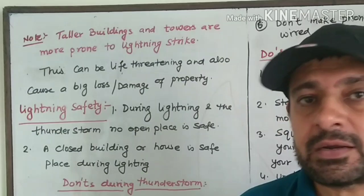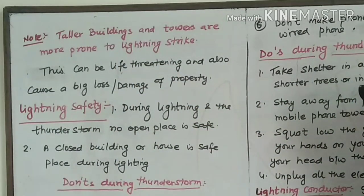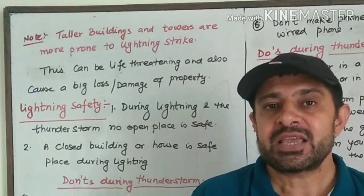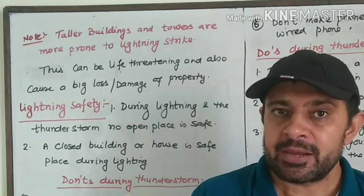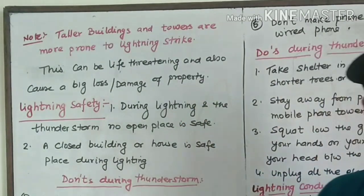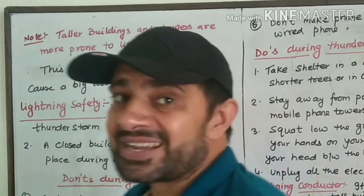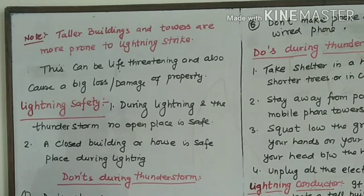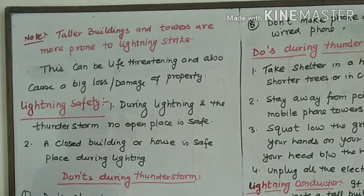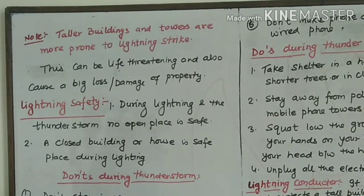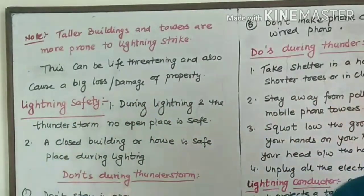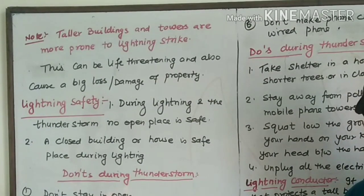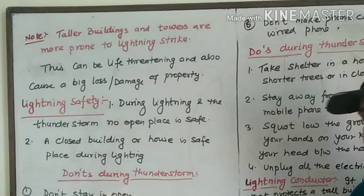Let us take one more note here. Taller buildings and towers are more prone to lightning strike. Lightning strikes can be life threatening and can also cause big loss or damage to property. So to avoid the life threat or to minimize property damage, we have to take certain safety precautions during thunderstorms.